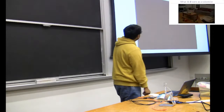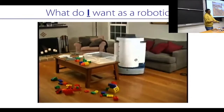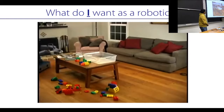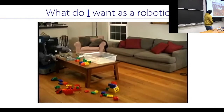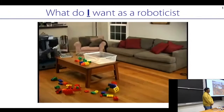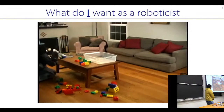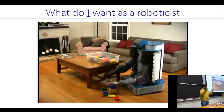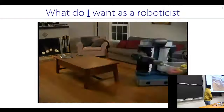This is a video of the PR1 doing things in a living room — putting away stuff, picking up blocks, doing pretty awesome things. The problem is that it's tele-operated and they're completely cheating. But if we could do this autonomously, that would be amazing. This is what I think about when I want to design robots for the real world and get these kinds of capabilities.